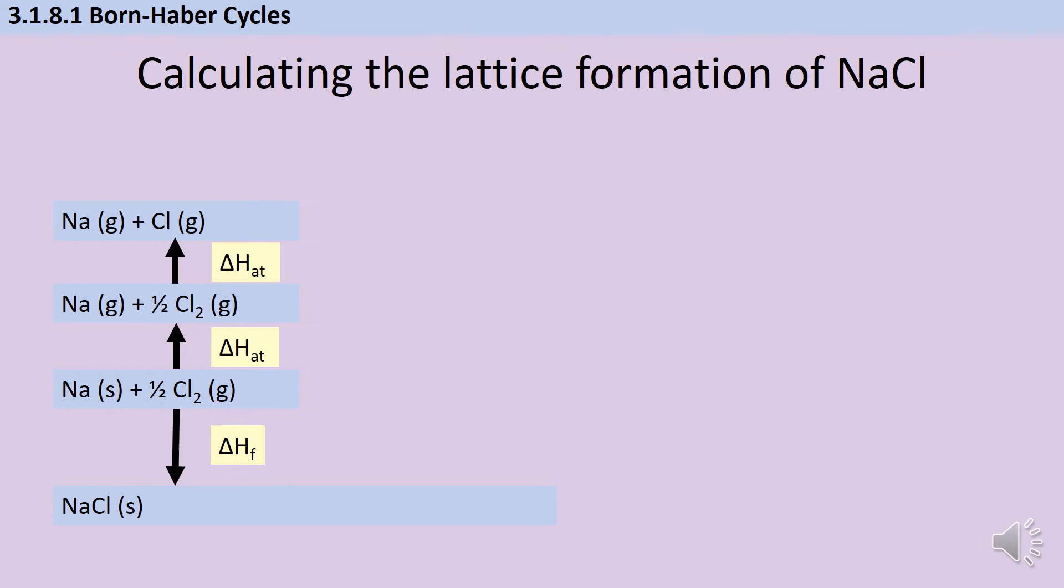Next, we need to think about electrons being lost and gained to form ions. So again, I'm going to go metal first, and we're going to start with the first ionisation enthalpy of sodium. Remember when you write the equation at this stage to include that electron. Quite often, I see people turning atoms into ions, and the electron has just disappeared somewhere, and we're going to need it. So make sure you include that in your equation.